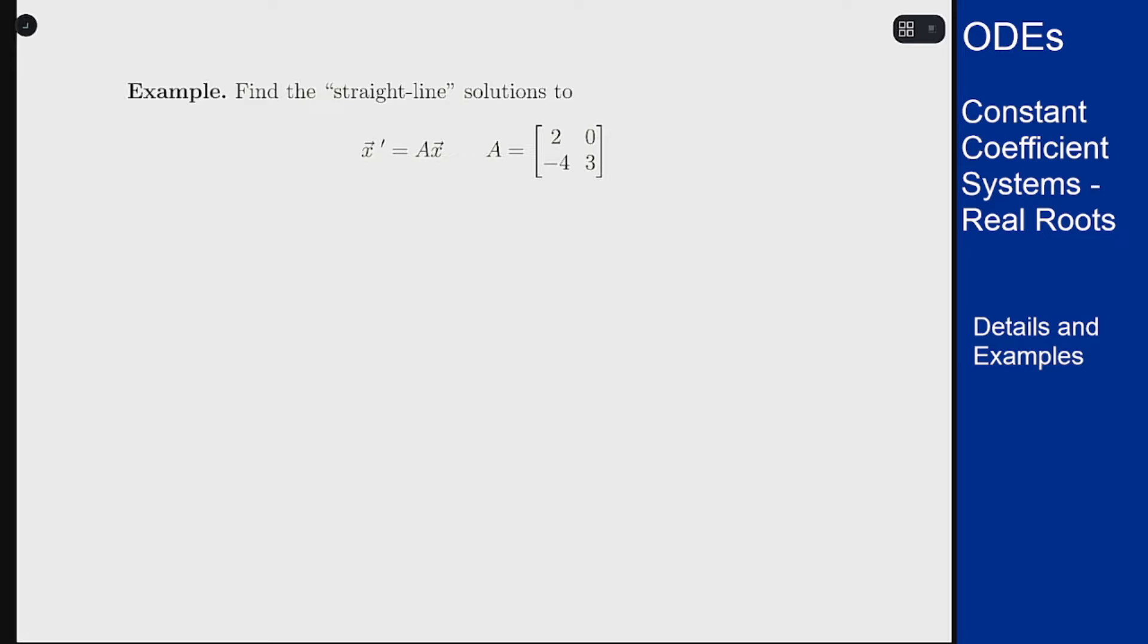As we saw previously, these straight-line solutions are solutions that move in a straight line on the xy plane and come from the eigenvalues and eigenvectors. These solutions are vector x of t equals v e to the lambda t, where lambda is an eigenvalue of A with corresponding eigenvector v.